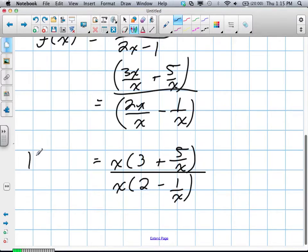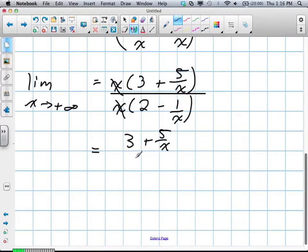Now what we're going to do is we're going to find the limit as x tends to positive infinity, a little different from what we did before. So in other words, we're also going to simplify this. That's going to give us (3 + 5/x) divided by (2 - 1/x).